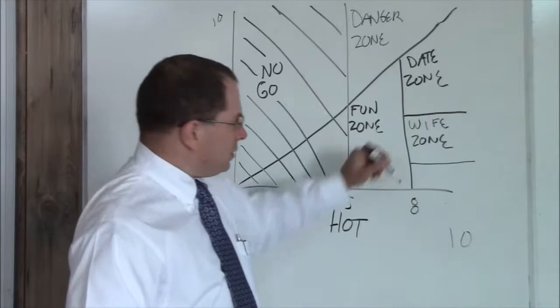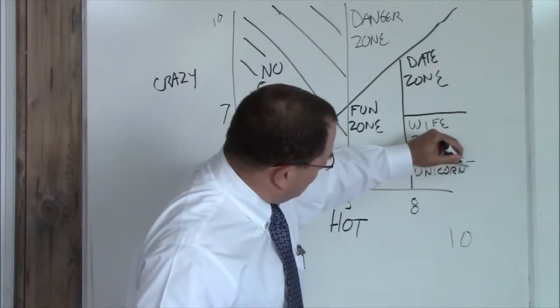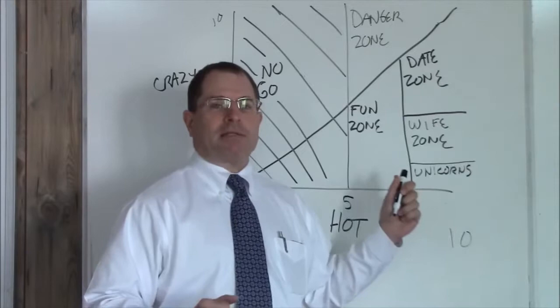Now, below a five crazy, and above an eight hot, this is your unicorn zone. These things don't exist. If you find a unicorn, please capture it safely, keep it alive. We'd like to study it and maybe look at how to replicate that.